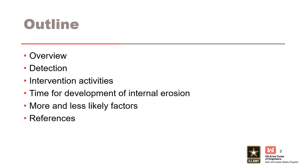The presentation will present an overview of detection and intervention. For evaluation of this node of the event tree, unsuccessful detection or intervention leads to breach. A qualitative method of assessing the time for development of internal erosion will also be discussed, which influences the likelihood of successful detection, intervention, or repair.